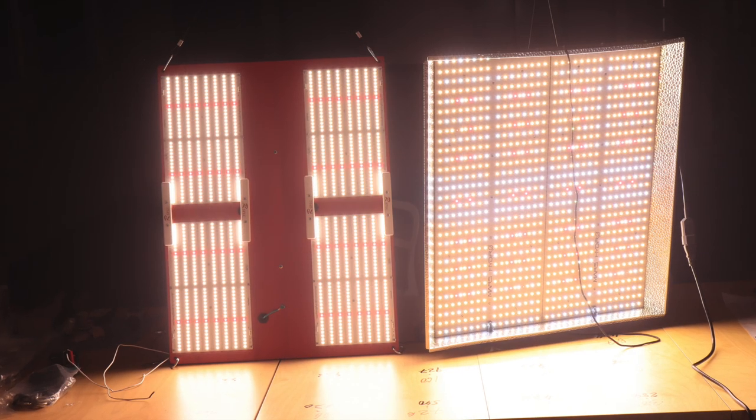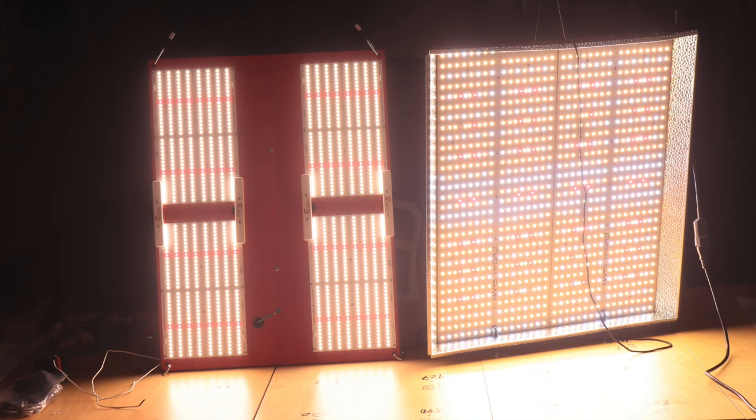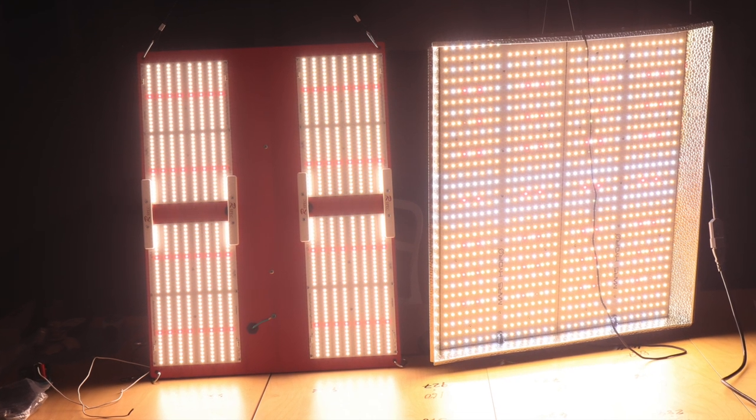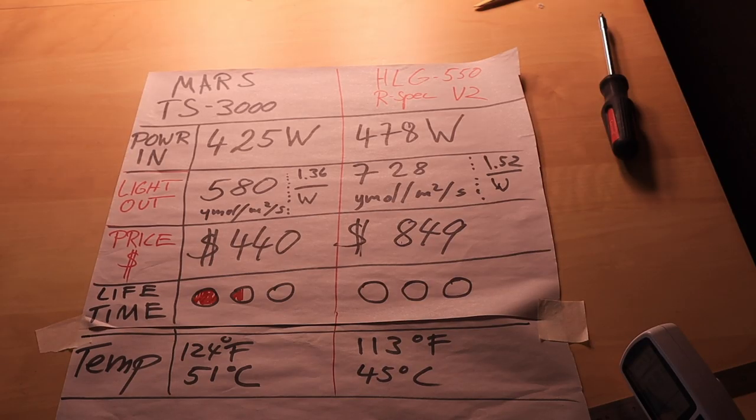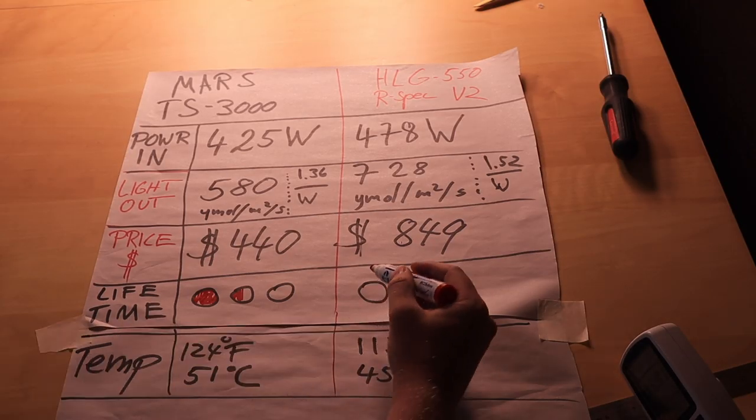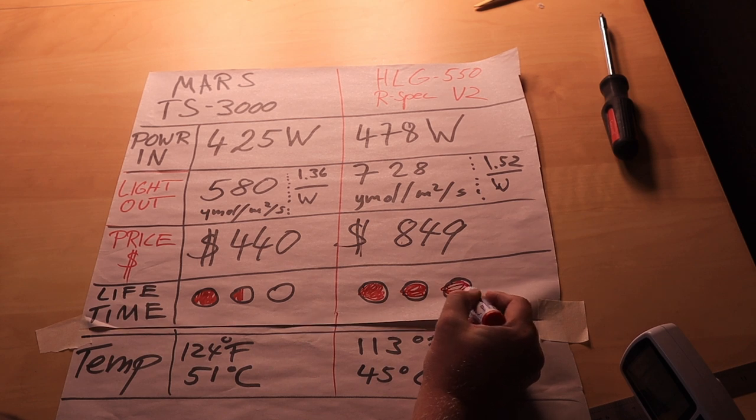What does that exactly mean? I just have a gut feeling that the cheaper chips from epistar burn out faster. They don't last as long as the Samsung chips. I'm gonna give the mass 1.5 out of 3 and the HLG 3 out of 3 for lifetime.